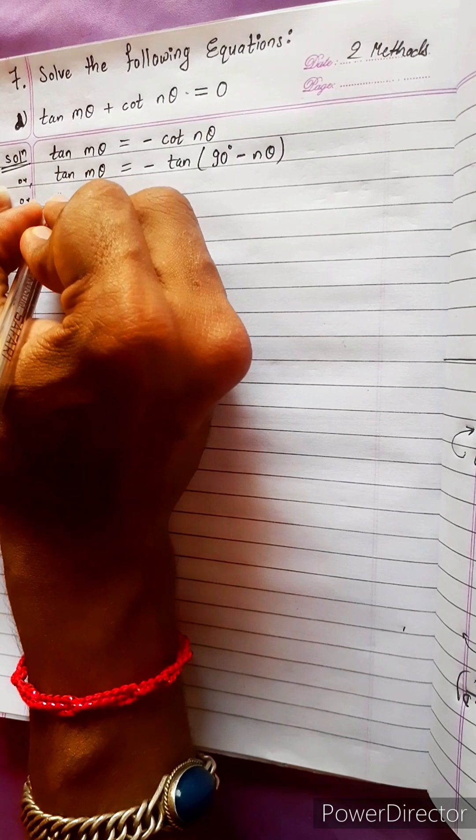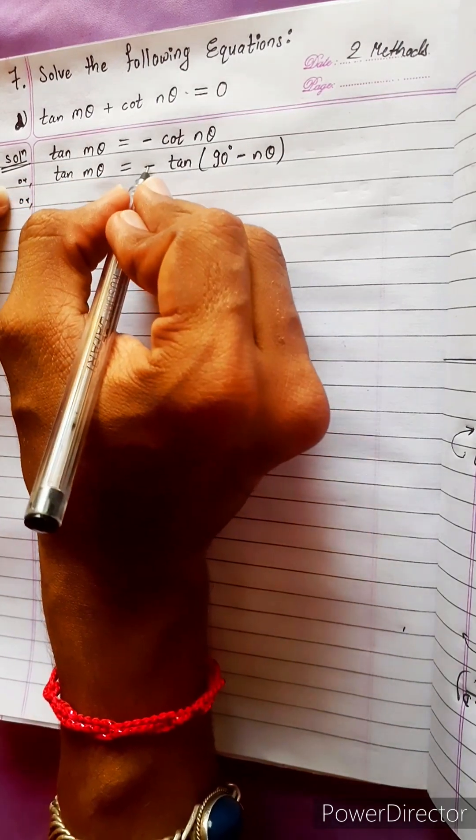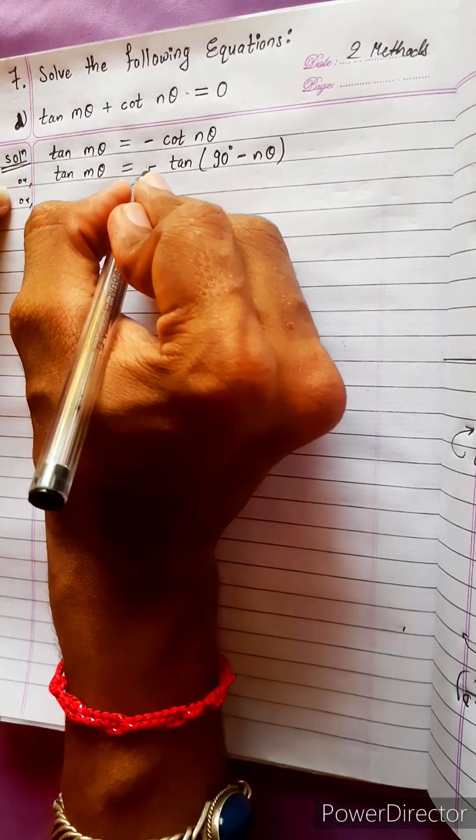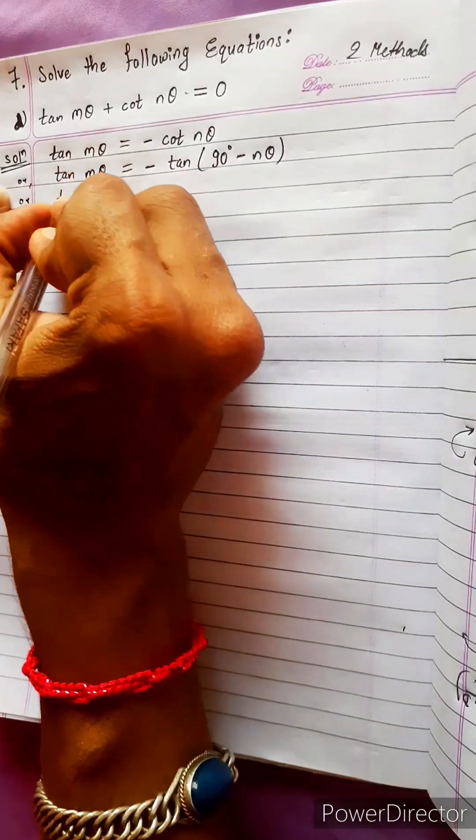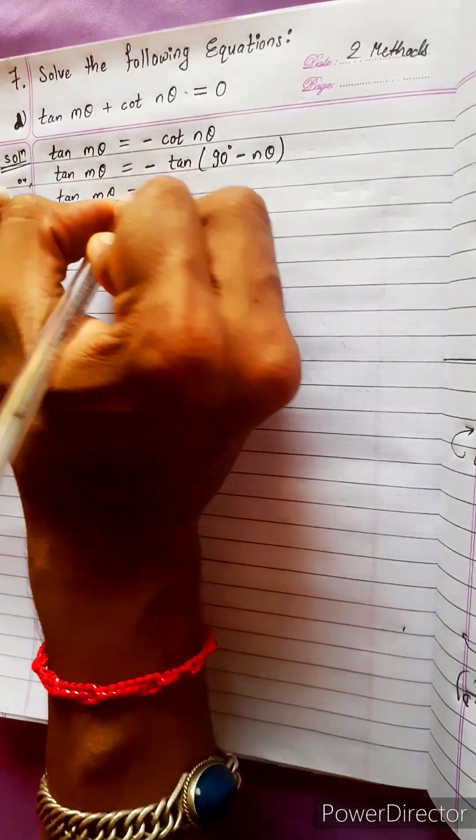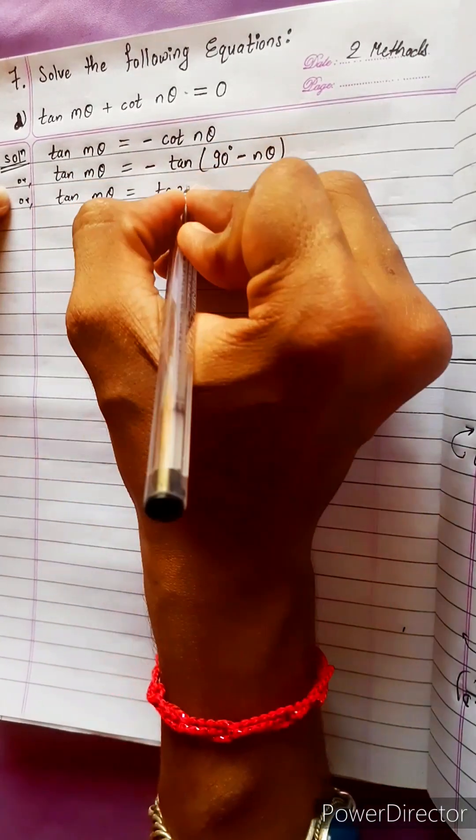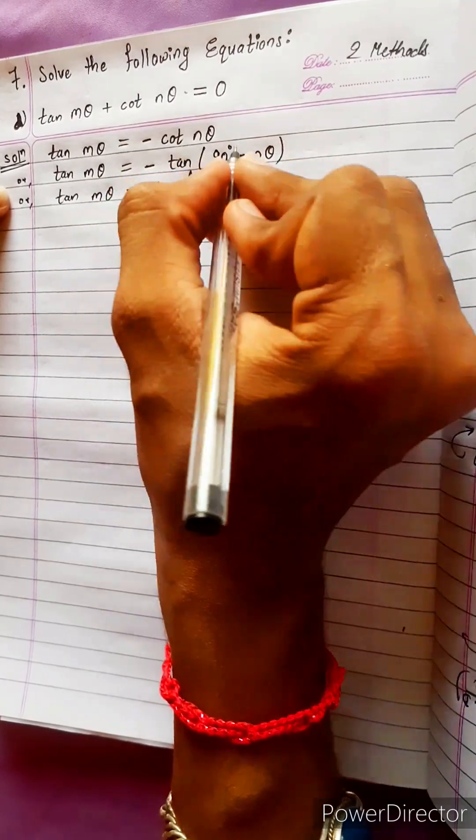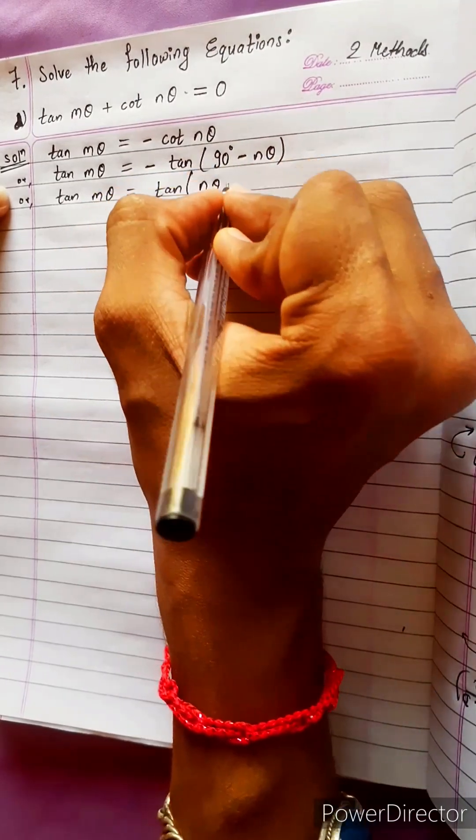Then now do one thing. This tan is negative. Negative what can we do? We can put it inside tan n theta. It will be minus into minus plus and this will be minus.